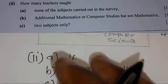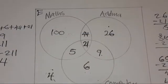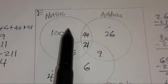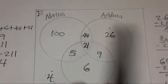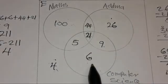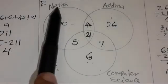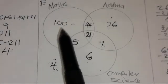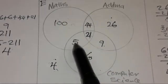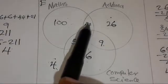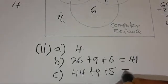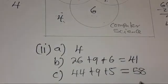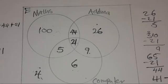Part C: how many teachers taught exactly two subjects? We add all values on the intersections of exactly two sets: 44 (maths and ADMA) + 9 (ADMA and CS) + 5 (maths and CS) = 58 teachers. If you are with me up to this point, please subscribe, hit the like button, comment, and share.